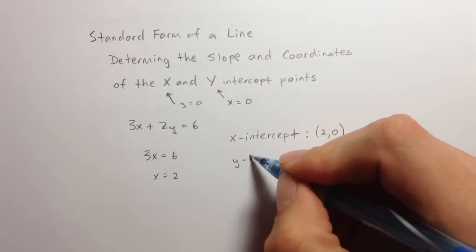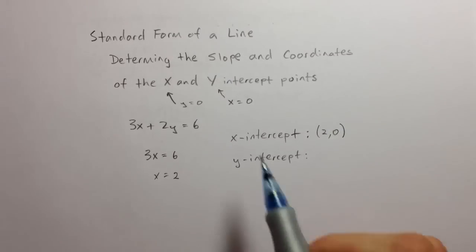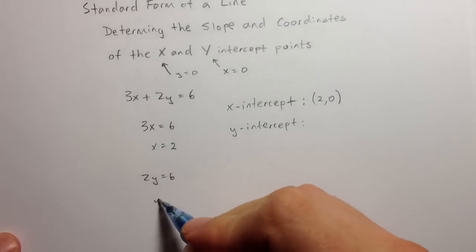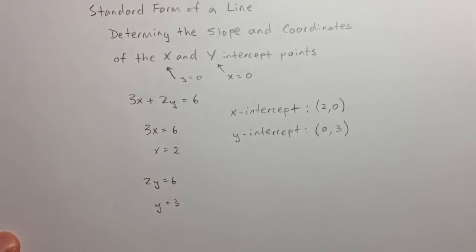The y intercept can be found by plugging in x equals 0 into this equation. So we're going to get 2y equals 6, therefore y equals 3. So the point 0, 3 is the y intercept.